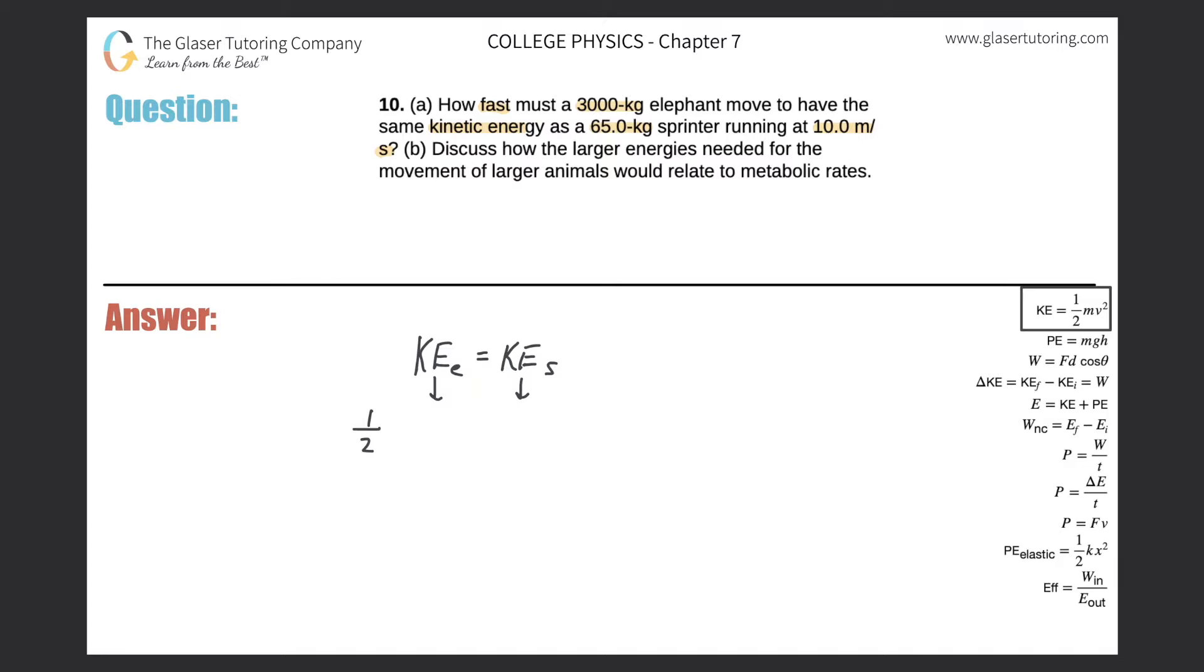So 1/2 times the mass of the elephant multiplied by the velocity of that elephant squared should be equal to 1/2 multiplied by the mass of the sprinter multiplied by the velocity of the sprinter squared. So again, you can see here the halves are going to cancel.